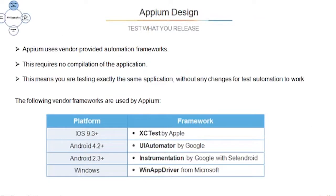Appium uses vendor-provided automation frameworks, which requires no compilation of the application. This means you are testing exactly the same application without any changes. Appium interacts with UI Automator by Google, XCTest by Apple, and WinAppDriver from Microsoft — that's how it can automate all three platforms in one.